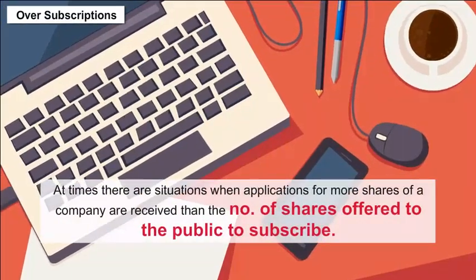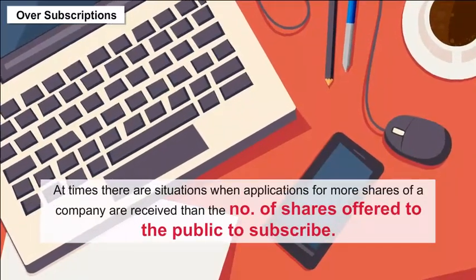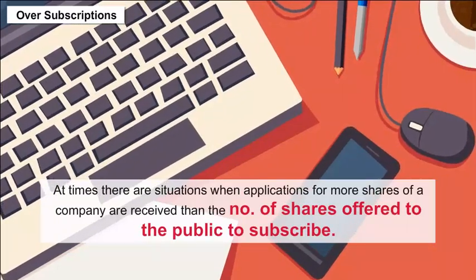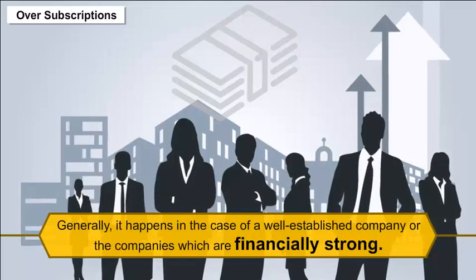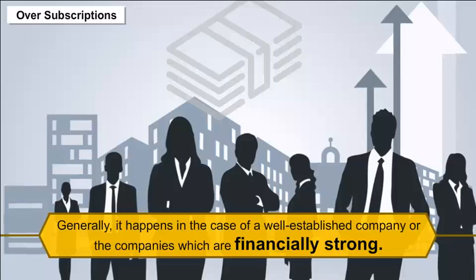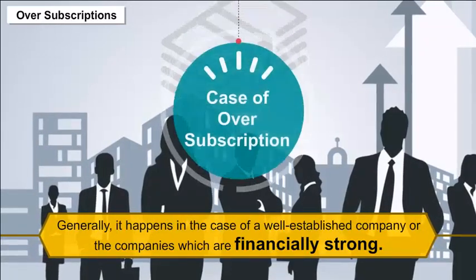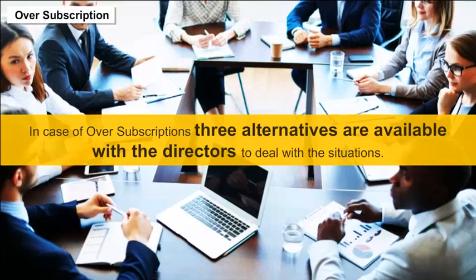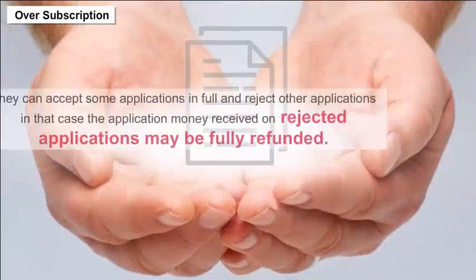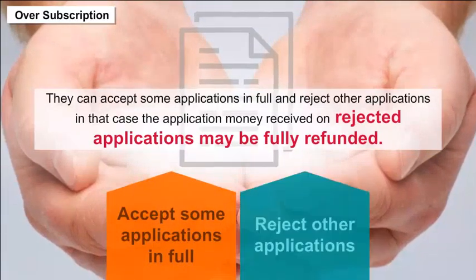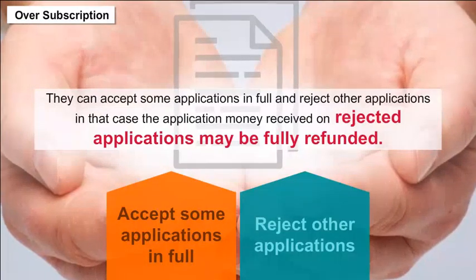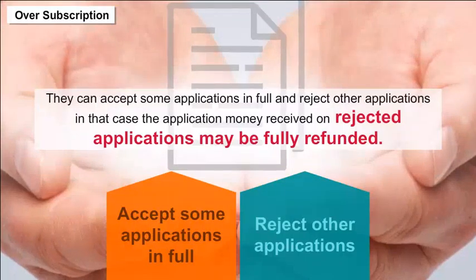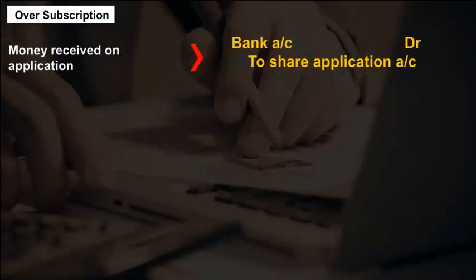Oversubscription: At times, applications for more shares are received than the number of shares offered to the public. This generally happens in the case of a well-established or financially strong company, and is called oversubscription. In such cases, three alternatives are available: the directors can accept some applications in full and reject others, refunding the application money received on rejected applications in full.